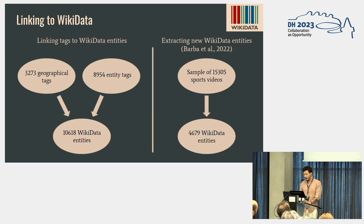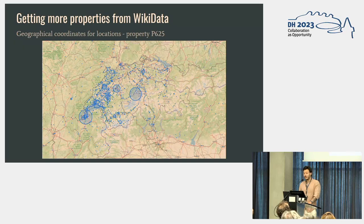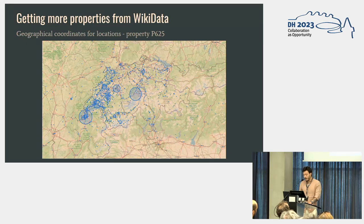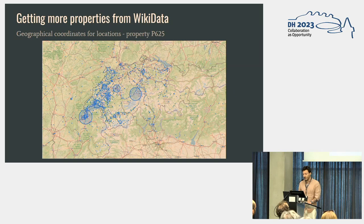The idea is that with this augmentation of the metadata, there's a lot more we can do. For instance, the first thing we looked at is geographical coordinates. Specifically, for the locations, we extract the geographical coordinates and plot them on a map of the world focused on Switzerland. We can see that it's mostly about the French-speaking parts, as RTS is the French-speaking broadcasting company, and mostly about the largest cities. So here we can start to see some of the biases in metadata, in which we only record the biggest information and we lose lots of actual information.